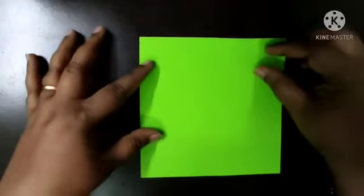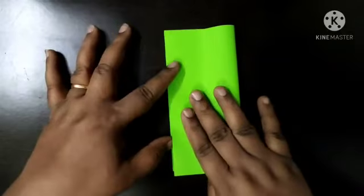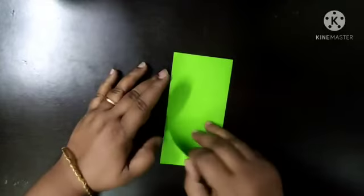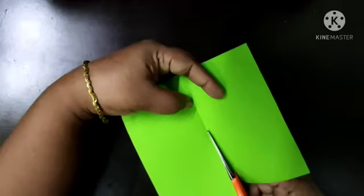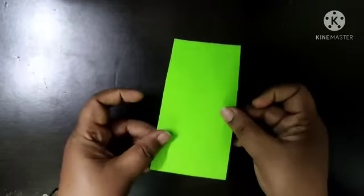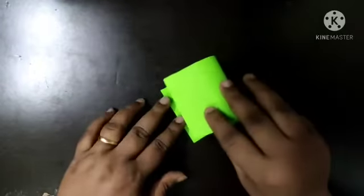Take the green color paper and make a rectangle fold. Open it and cut it with the scissors. Take the half part of the paper and make it square.